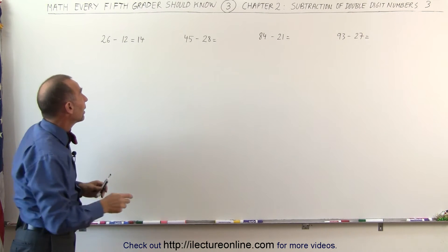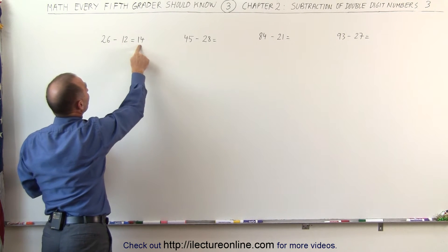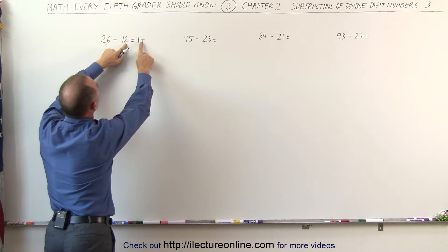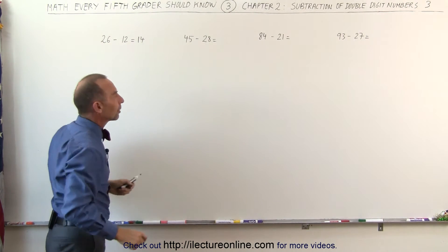Again, quickly check to see if you did it right by adding these two numbers together to see if you get the original number back. 1 plus 1 is 2, 2 plus 4 is 6. Yes, we did it correctly.